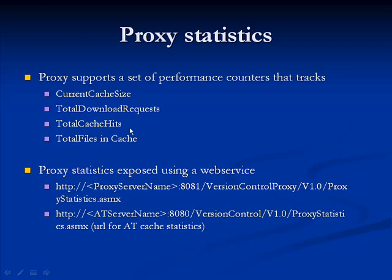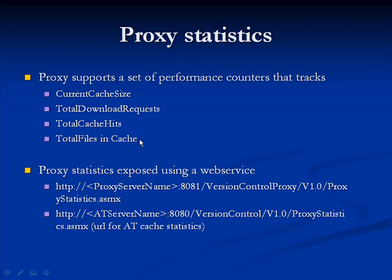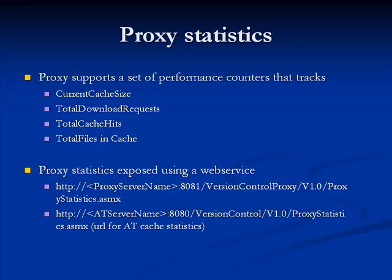These are just typical performance counters. You can view them using Perfmon or any other standard analysis tools capable of displaying performance counters. We also provide a web method on both the proxy and the application tier cache — you can see the URL here — which exposes the latest values of these counters in XML format. In the case of the proxy, since it can cache files from multiple application tiers, we have a set of counters for each application tier, so you can drill down and see how many requests were received per application tier.